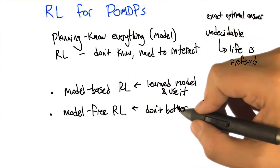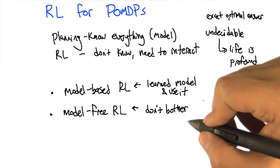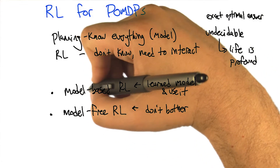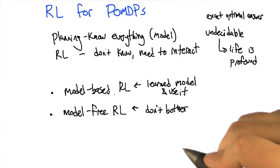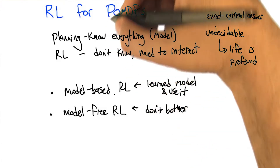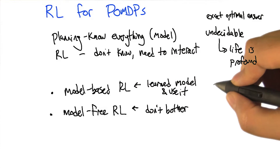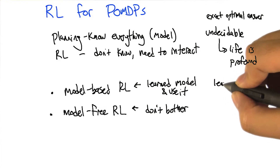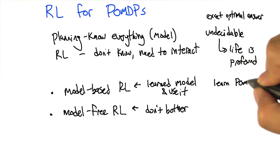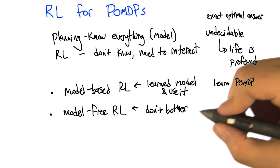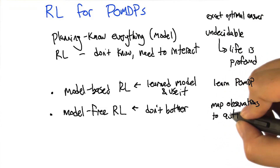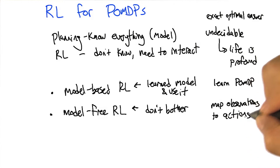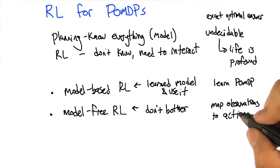I think the little quip was "the world is your model" — probably Rod Brooks. So we can actually use this same distinction, model-based RL and model-free RL, in the POMDP setting. In model-based RL, you actually try to learn the POMDP and then you plan in it. In model-free RL, we try to map observations to actions, and we do that iteratively over time. So we don't actually build the model, but we do try to figure out: when I see this, this is a good thing to do.